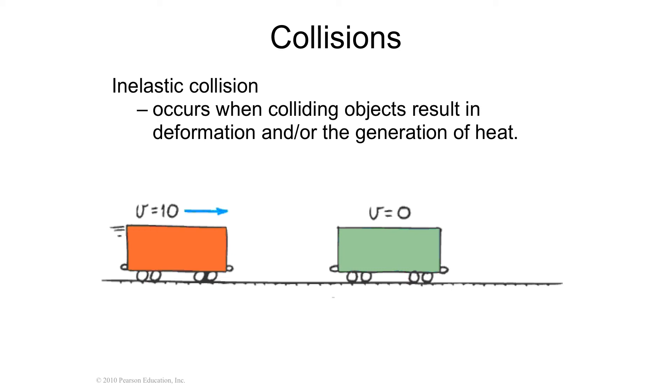And so it's losing energy as it does it because most things are inelastic. So here's two train cars. One's going a velocity of 10 meters per second. The other one's stopped. So when they attach to each other...